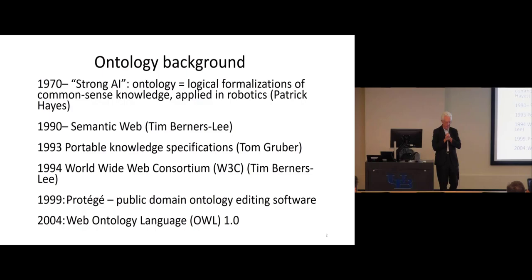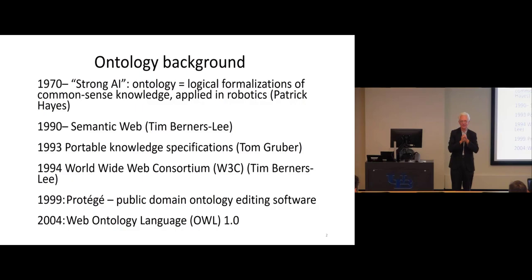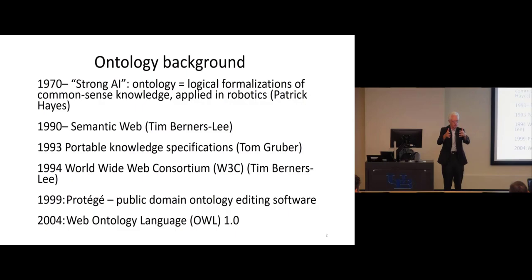This was part of knowledge representation, a part of computer science. That particular phase of AI failed — strong AI, meaning translating human knowledge into computer-readable knowledge, didn't work. But it gave rise to interesting ideas about knowledge representation and, most importantly, how you transfer knowledge from one computer to another or from one person to a computer. Knowledge representation was born as a discipline, and ontology was pretty much a part of it.